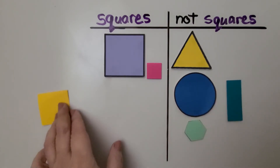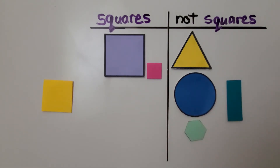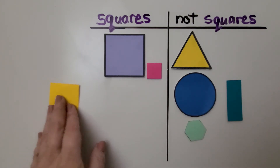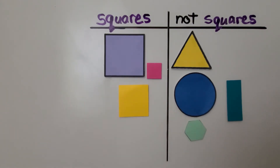What about this one? Is this a square? It's got four sides that are straight and match each other. It's got one, two, three, four vertices, four corners. Yes — if you said that's a square, you were right. We were able to sort the shapes into sets of squares and not squares.